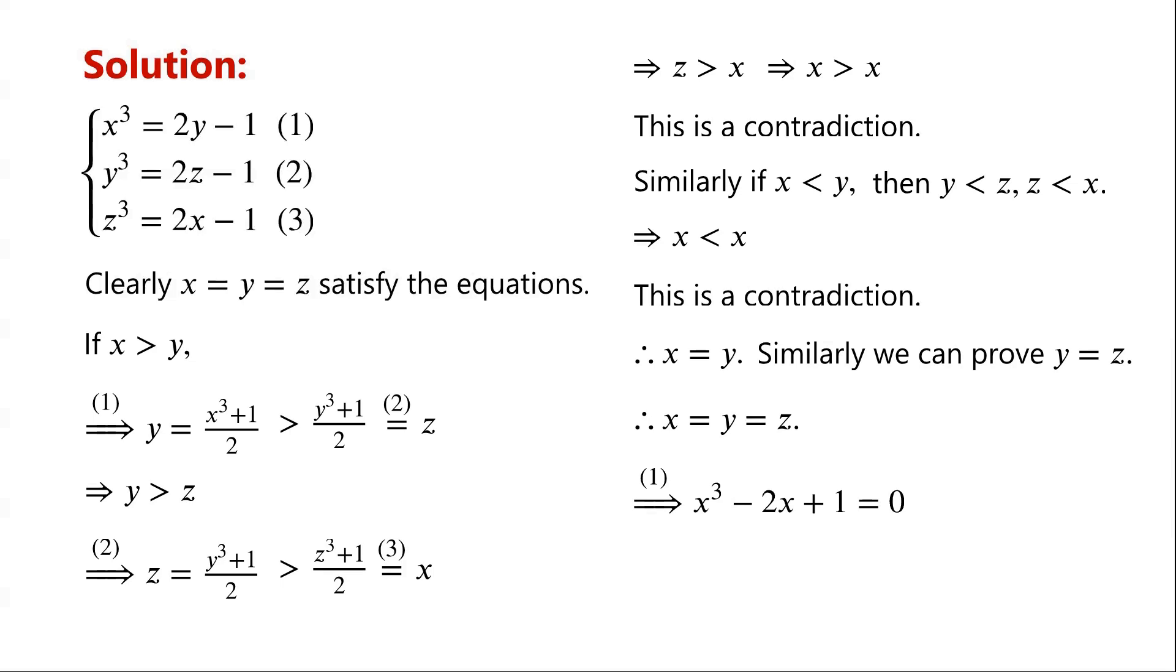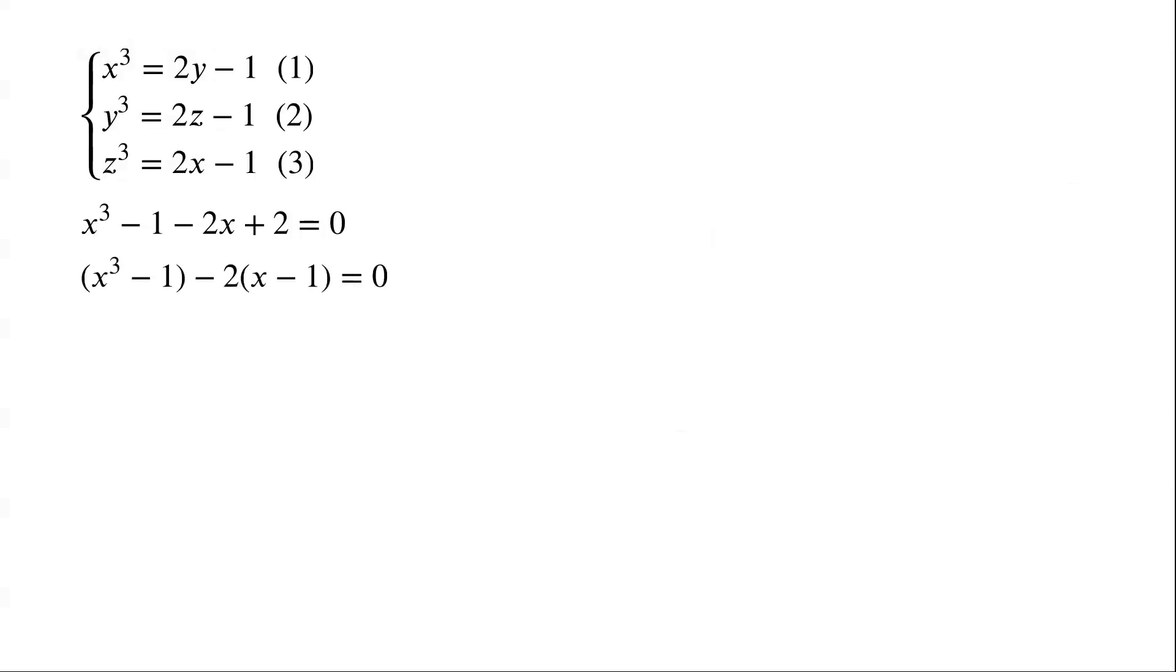Clearly x = 1 is a solution of the equation. We will use the factorization method to solve this cubic equation. Write the constant term 1 as -1 + 2, so the equation becomes x³ - 1 - 2x + 2 = 0. Write -2x + 2 as -2(x - 1). x³ - 1 equals (x - 1)(x² + x + 1). Now the two terms have a common factor x - 1, so they can be factorized as (x - 1)(x² + x - 1) = 0.